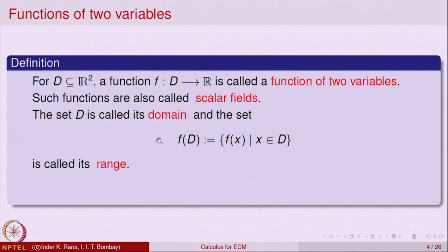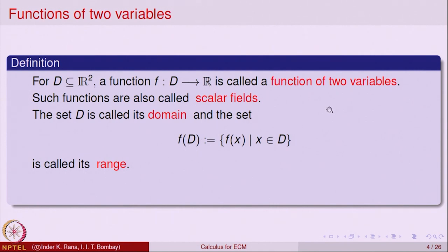D is called the domain of the function. The set of all values f(x) as x ranges over D gives a subset of the real line called the range. So, for a function of two variables, the domain is a subset of the plane R² and the range is a subset of the real line R.